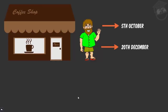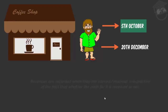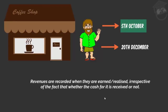So when should I record this transaction — on 20th of December when I received the cash, or on 5th of October when I actually provided the services? The transaction as per this concept will be recorded on 5th of October, when I actually provided the services. So under accrual concept, revenues are recorded when they are earned or realized, irrespective of whether the cash for it is received or not.